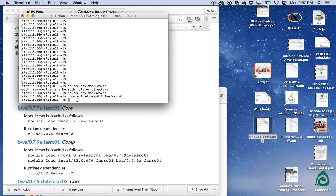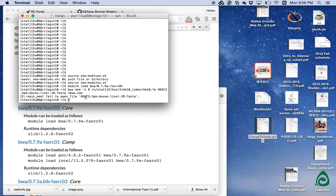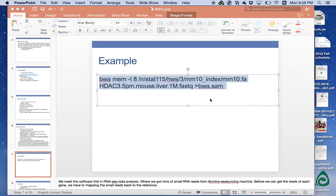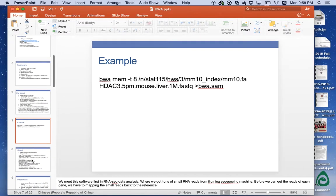Go back to Odyssey. After loading BWA, type bwa mem -t indicating you want to use 8 threads, and the index genome file, the name of it and the location of it, followed by the reads file. And a redirect sign indicating to write the result to the output file you listed here. Otherwise, BWA will simply write the result to the standard out, which is the screen, and it will be hard for you to save it and do further analysis of it.